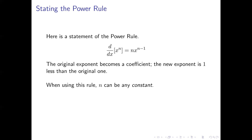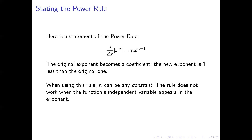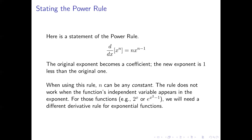Here again, n can be any constant. The power rule does not apply when the independent variable of your function appears in the exponent. So examples of those kinds of things would be two to the power x, or e to the power x squared minus one, where x is the independent variable appearing in the exponent. The power rule will not apply to these kinds of functions. We'll have a separate derivative rule introduced later involving exponential functions. But as long as the exponent is a constant, the power rule applies.